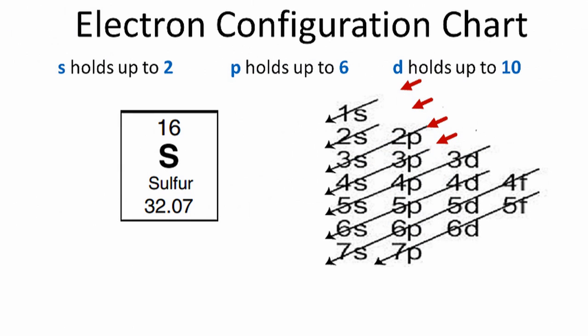We'll use the chart on the right to help us determine the electron configuration for sulfur. So in that first row, we'll go down, and we have the 1s. S orbitals can hold up to two, so we'll put two electrons in that 1s orbital.